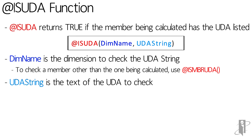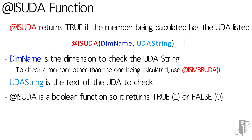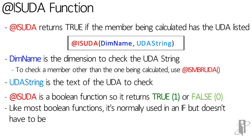The UDA string is the text that you want to be checking. Because this is a boolean function, it returns either true or false, otherwise known as a 1 or a 0. And like most boolean functions, you would normally put this inside of an if statement.